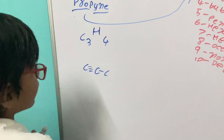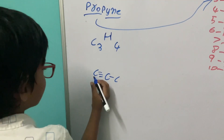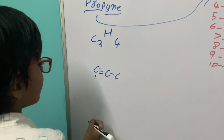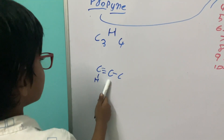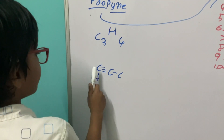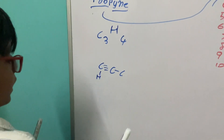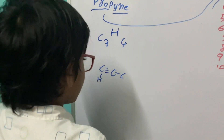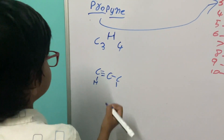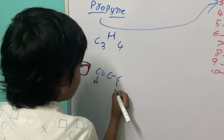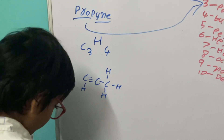Everyone knows the valence of carbon is 4. This carbon atom is getting 3 electrons from this carbon element, so it needs one more electron which is shared by the hydrogen atom. This carbon atom is getting 3 electrons from this carbon element and one from this carbon element, so it is already stable. This carbon atom is getting 1 electron from this carbon atom, so it needs 3 electrons which are shared by the hydrogen atom.